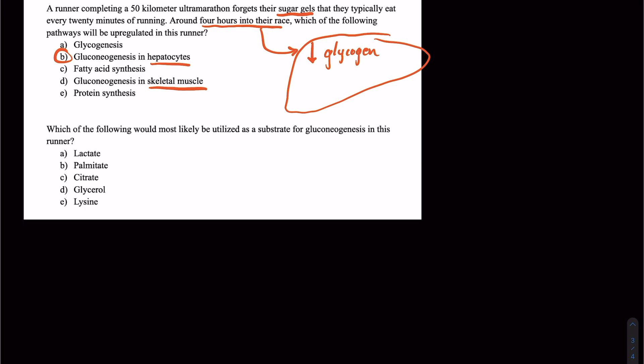So D is also a tempting answer, gluconeogenesis in the skeletal muscle. And that's not going to be correct because skeletal muscle doesn't really have the capacity to perform gluconeogenesis. And part of the reason for that is it actually doesn't have that glucose-6-phosphatase enzyme in the rough endoplasmic reticulum in the same way that the liver does.